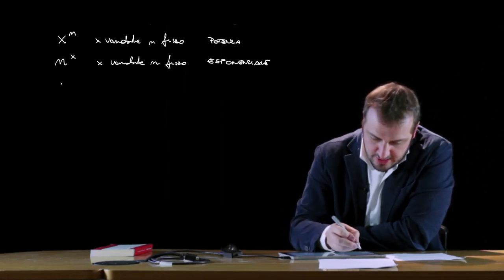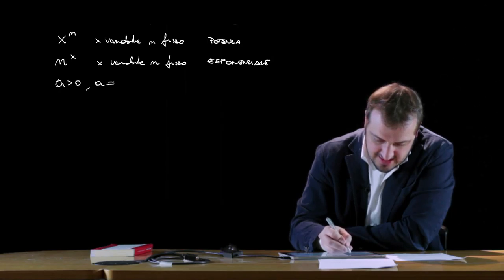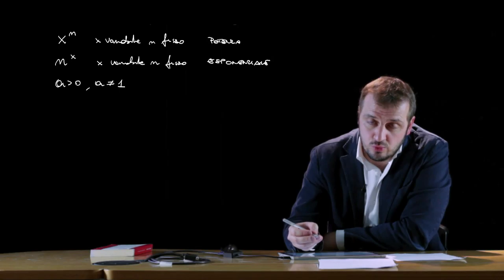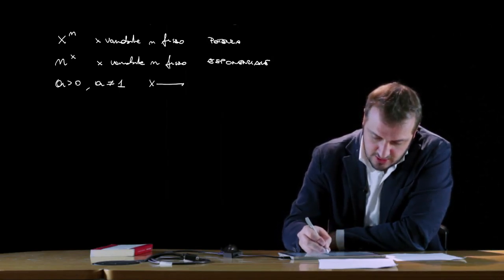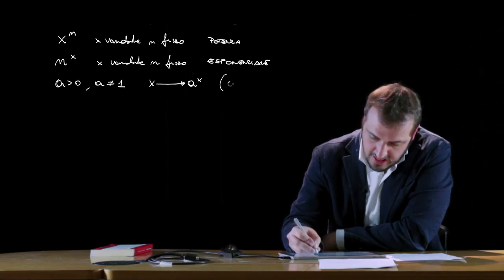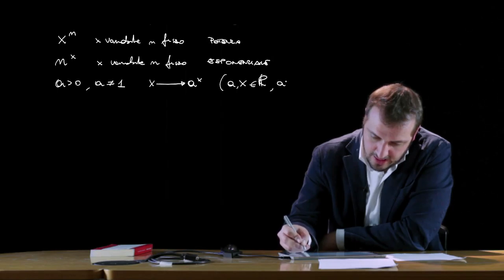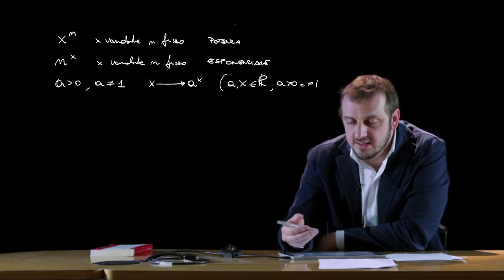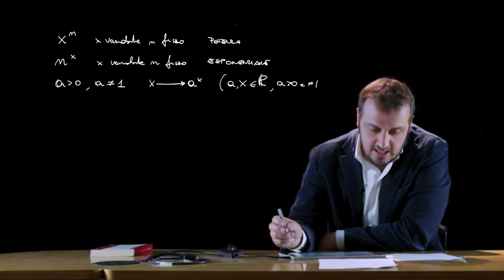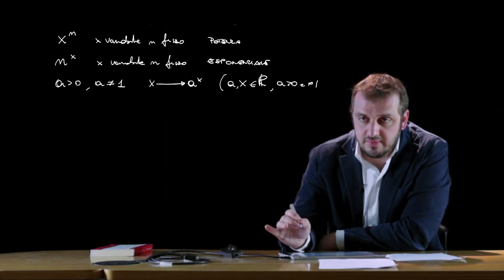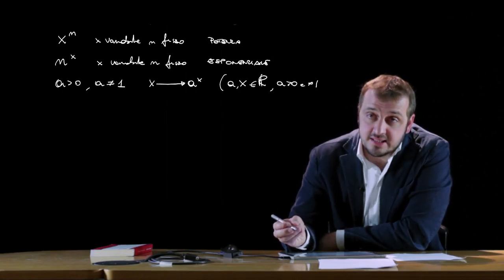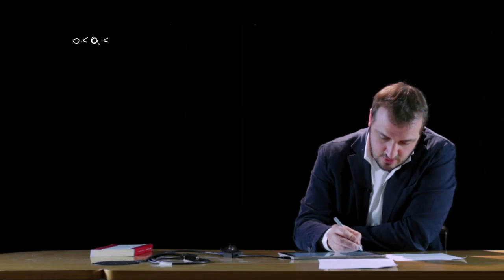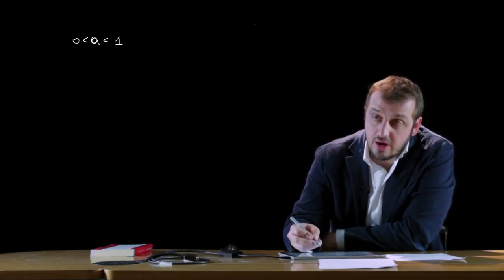Generalizzando, dato un numero reale a positivo e tale che sia diverso da 1, è possibile associare ad un qualunque numero x il numero reale a^x. Ad ogni x è possibile associare a^x, con a ed x appartenenti ai reali, a maggiore di 0 e diverso da 1. In questo modo resta definita una funzione reale di variabile reale, chiamata funzione esponenziale di base a, il cui dominio è tutto il campo dei reali.